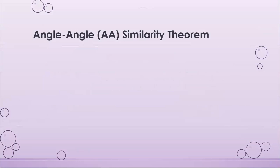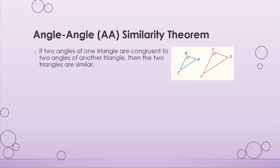Our first triangle similarity theorem is the Angle-Angle similarity theorem. This states that if two angles of one triangle are congruent to two angles of another triangle, then the two triangles are similar. Since triangle angles add up to 180 degrees, if the first two angles are the same, then the third angle also has to be the same.